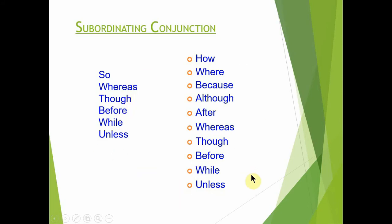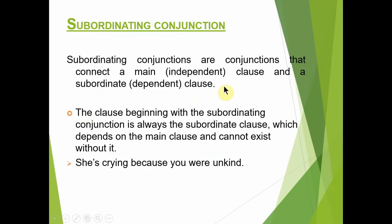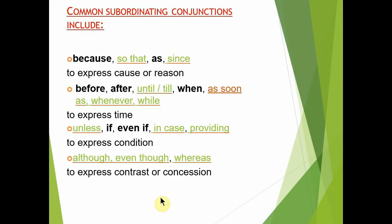Subordinating conjunctions independent clause کو dependent clause سے جوڑتے ہیں۔ وہ clause جو subordinating conjunction سے start ہو، وہ ہمیشہ subordinate clause ہوتا ہے اور main clause کے بغیر اس کا وجود ممکن نہیں۔ جیسے 'She is crying because you are unkind' — یہاں 'because' subordinating conjunction ہے۔